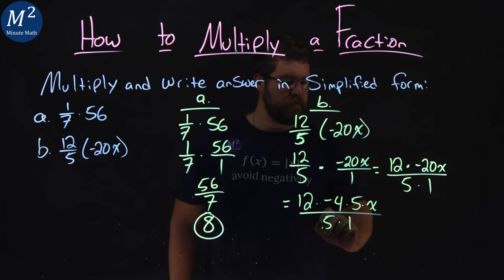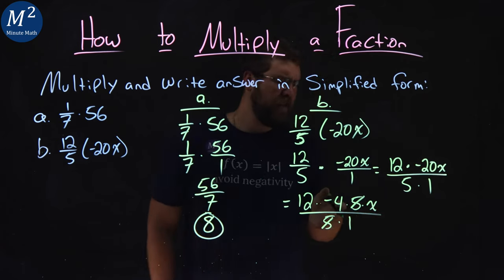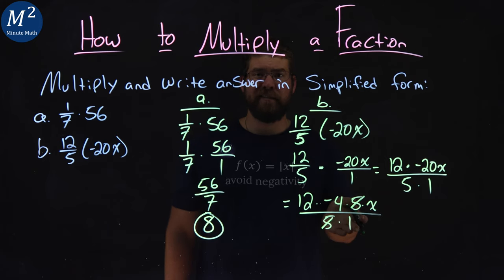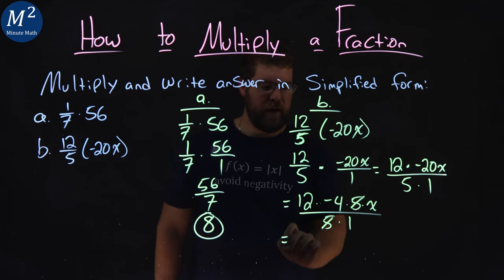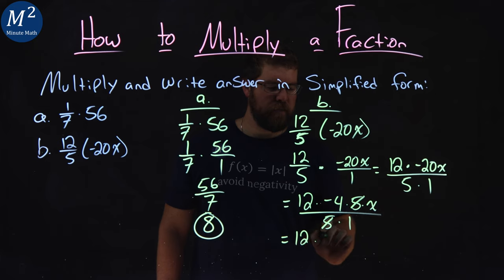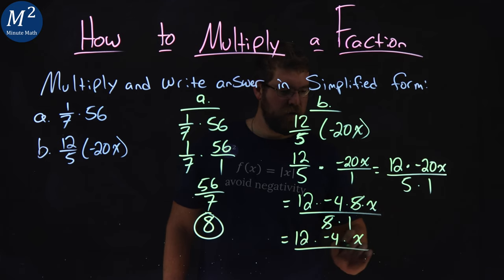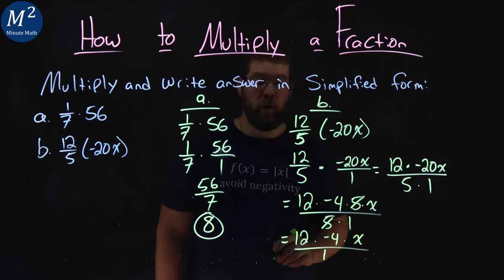The 5s cancel numerator and denominator here. And nothing else really cancels. We have 1 left in the denominator. And so we have 12 times negative 4 times x over positive 1.